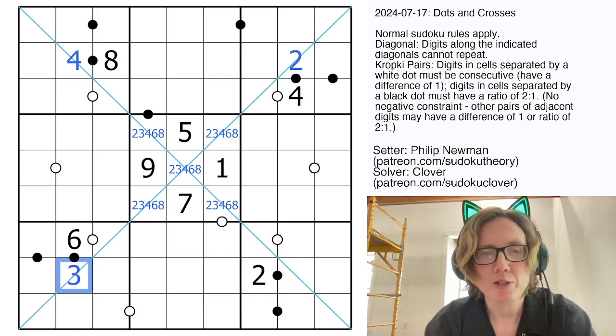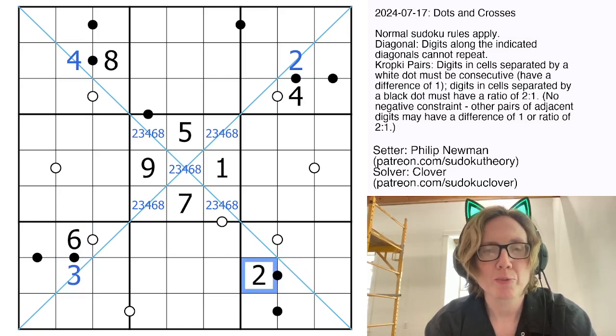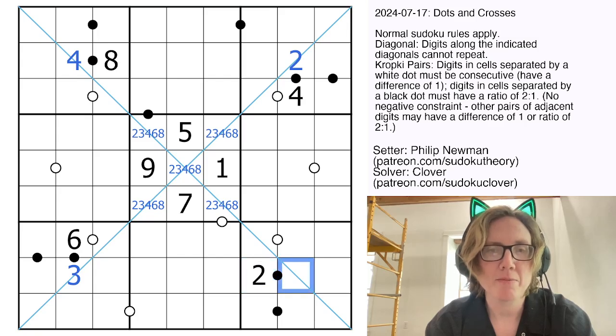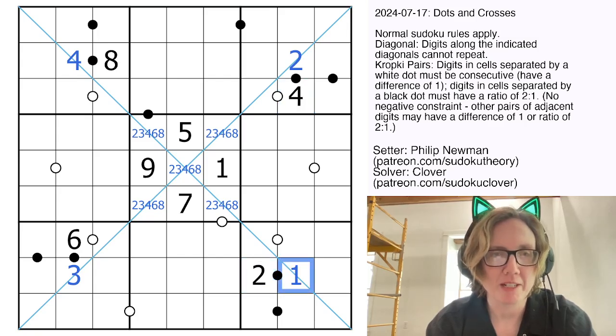6 is in a 1 to 2 ratio with only 3. 2 is in that ratio with either 1 or 4. 2 is twice as big as 1, 4 is twice as big as 2, but because there is a 4 in the column, I have to place a 1 here.